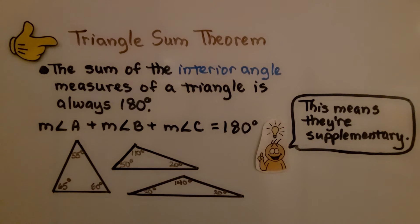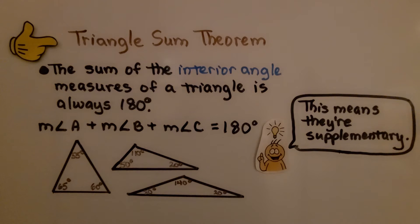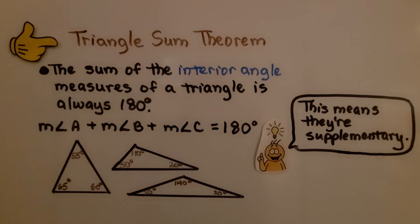This brings us to the triangle sum theorem. The sum of the interior angle measures of a triangle is always 180 degrees. The measure of angle A plus the measure of angle B plus the measure of angle C is equal to 180 degrees. This means they're supplementary. They equal 180 degrees.